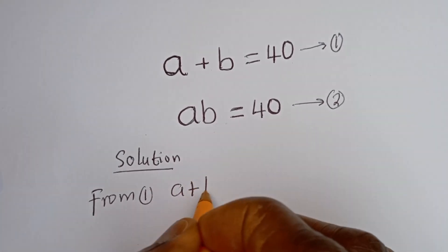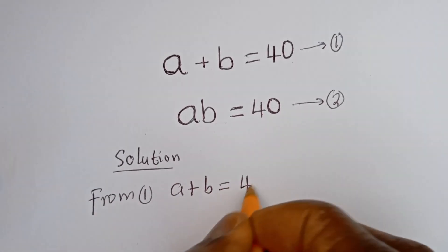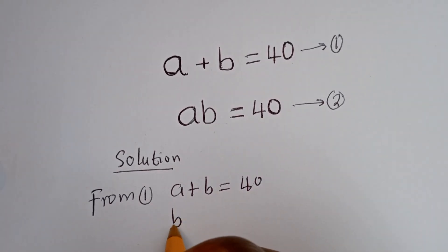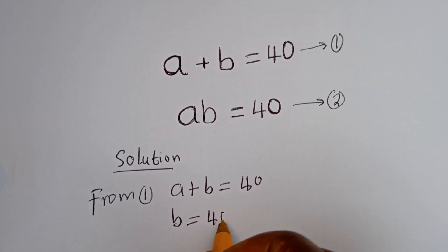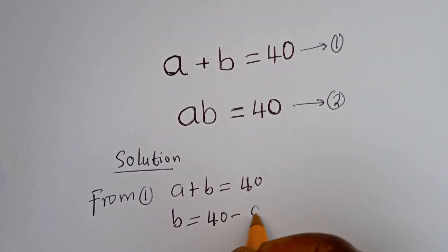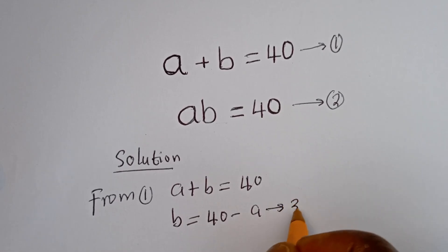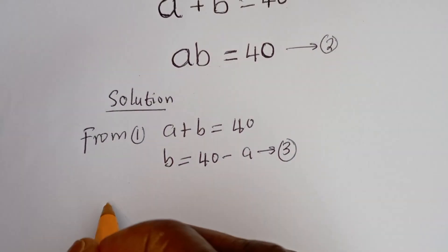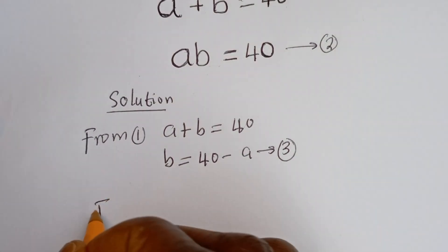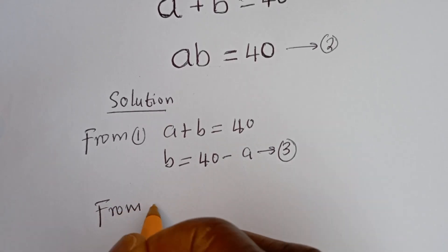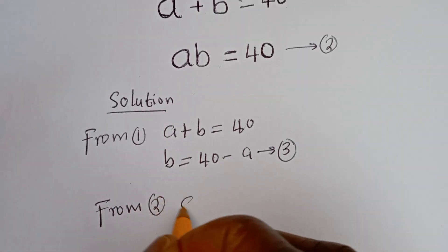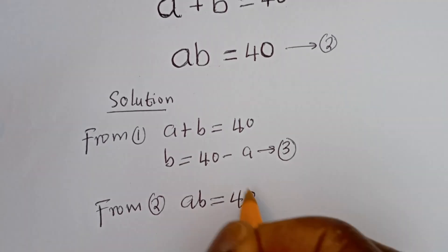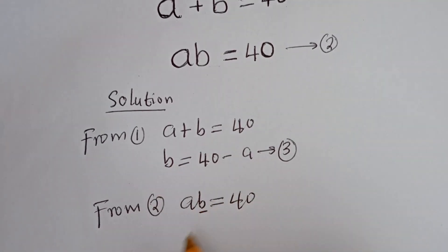From equation 1, A plus B is equal to 40, so B is equal to 40 minus A. Let's call this equation 3. From equation 2, AB is equal to 40. We can now substitute for B.